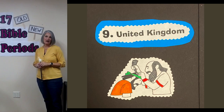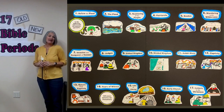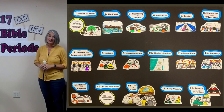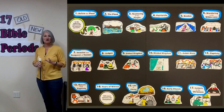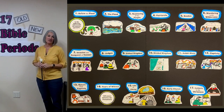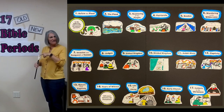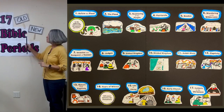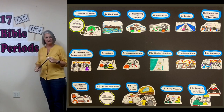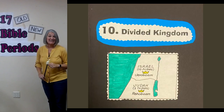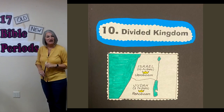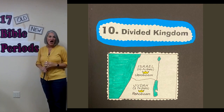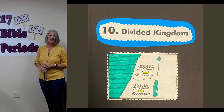Our next one is King Ahab — that name should make you cringe a little bit. He was a wicked, wicked king, and he had a wife to match: Jezebel. King Ahab wanted Naboth's vineyard so badly that Jezebel had Naboth killed just so her husband could have his vineyard. That's an Old Testament story and it fits during the divided kingdom. King Ahab was a king of Israel — and there were no good kings in Israel. Isn't that a sad, sad thing?